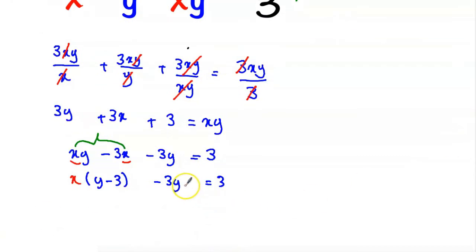The next step, we will add 9 to both sides of the equation. So we get x multiplied by y minus 3 minus, here we can take 3 as a common factor, so minus 3 times y minus 3 equal to 12.